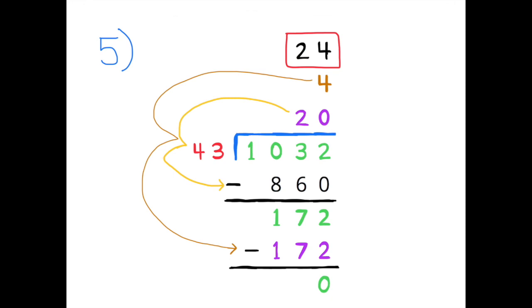172 minus 172 equals 0. So let's go back to the top. 20 plus 4 equals 24. So 1,032 divided by 43 equals 24.